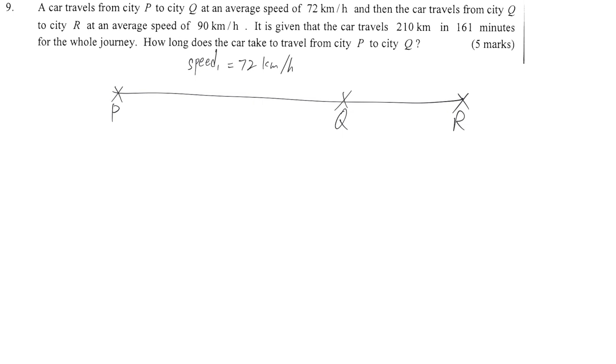Similarly, from Q to R, the average speed 2 is equal to 90 km per hour.